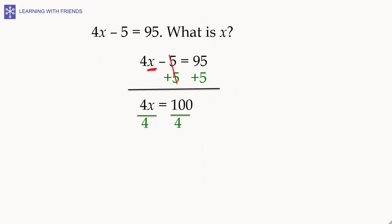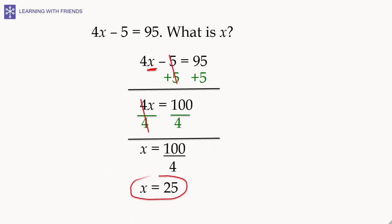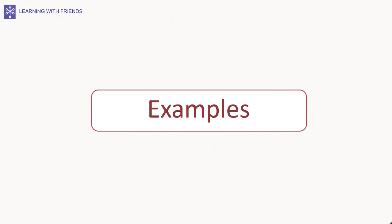To further isolate x, we divide both sides of the equation by 4. This leaves us with x on the left hand side and 100 divided by 4 on the right hand side, which is 25. Thus x equals 25 is the solution of the linear equation 4x minus 5 equals 95.